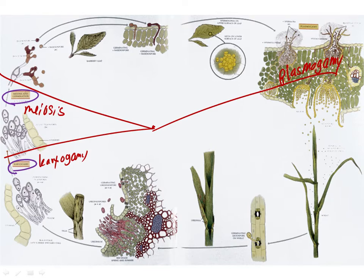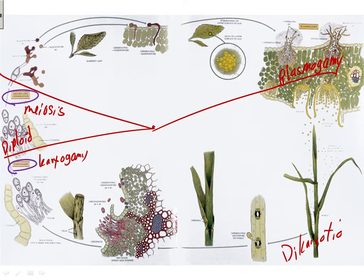That means we have, between plasmagamy and karyogamy, the dikaryotic phase; between karyogamy and meiosis, the diploid phase; and between meiosis and plasmagamy, the haploid phase.